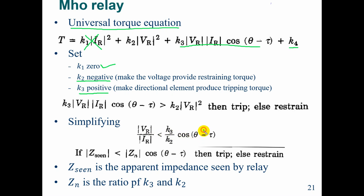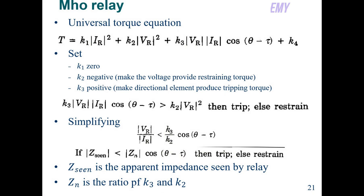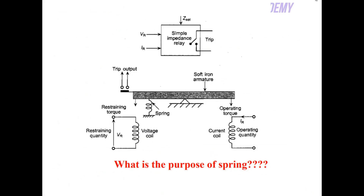Vr divided by Ir is the apparent impedance Z seen by the relay, and Z_in is the ratio k3/k2 × cos(θ − τ). If this condition is met, your relay will trip; otherwise it will restrain. Now let's talk about the beam. This is the restraining coil and this is the operating coil. This is the torque due to the directional components and this is the torque due to the voltage.